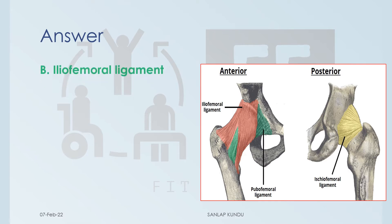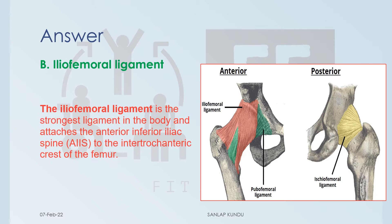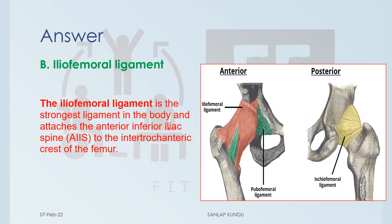The answer is option B, the iliofemoral ligament. The iliofemoral ligament is the strongest ligament in the body and attaches the anterior inferior iliac spine to the intertrochanteric crest of the femur.